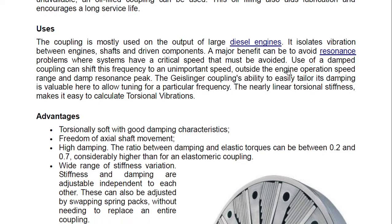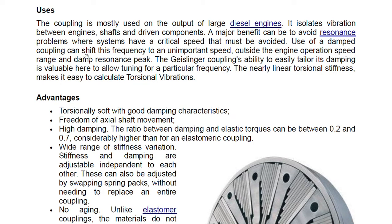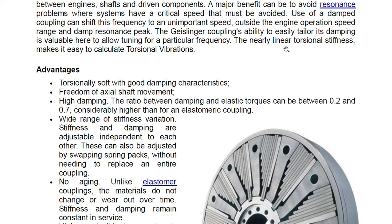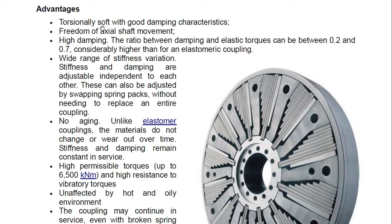The Geislinger coupling is mostly used on the output of large diesel engines. It isolates vibration between engine shafts and drive components. A major benefit is avoiding resonance problems where systems have critical speeds that must be avoided — use of a dampened coupling can shift this frequency to an unimportant speed outside the engine operating range and damp resonance peaks. Its ability to be easily tailored in damping is valuable for tuning to a particular frequency. The nearly linear torsional stiffness makes it easy to calculate torsional vibration. Advantages include torsionally soft characteristics with good damping, freedom of axial shaft movement, and high damping ratio between 0.2 and 0.7.